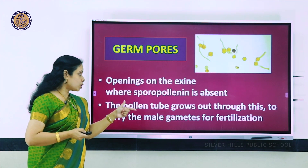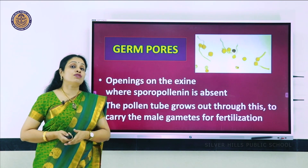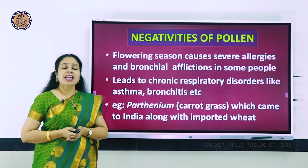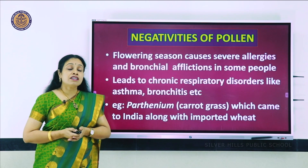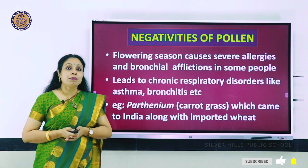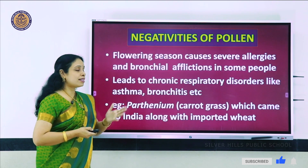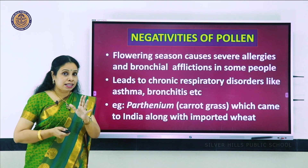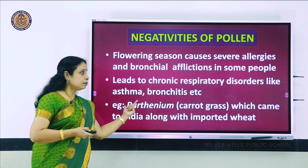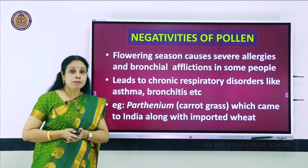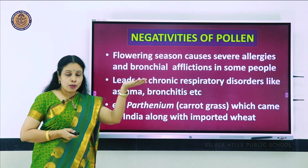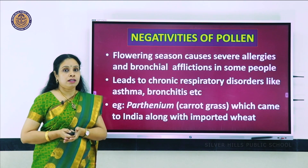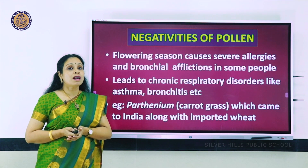The pollen tube grows out through the germ pores and carries the two male gametes for fertilization. There are some negatives about pollen - mainly they cause severe allergy. During flowering season, people who have asthma, bronchitis, and other respiratory disorders are badly affected. A good example is parthenium, commonly called carrot grass - an alien species which came to India along with imported wheat and is capable of causing pollen allergy.